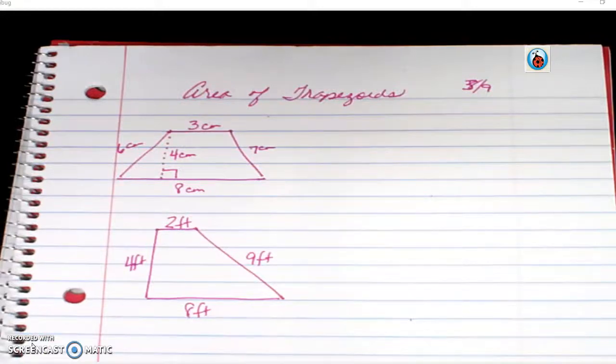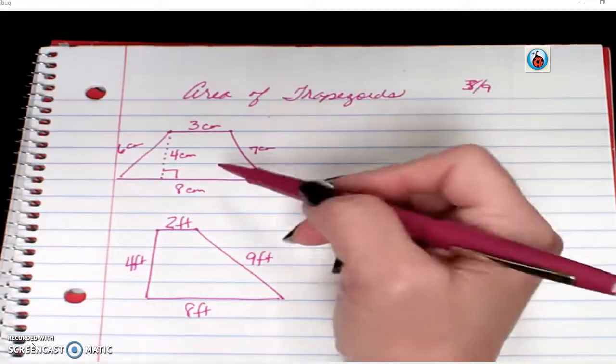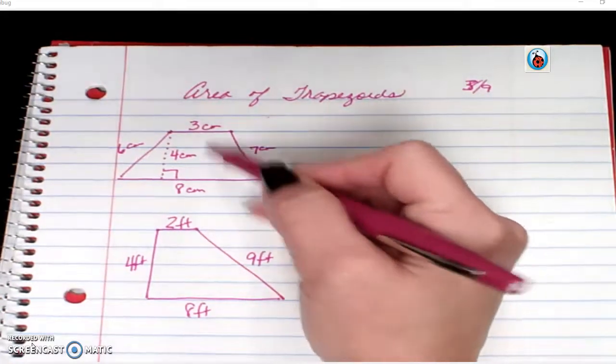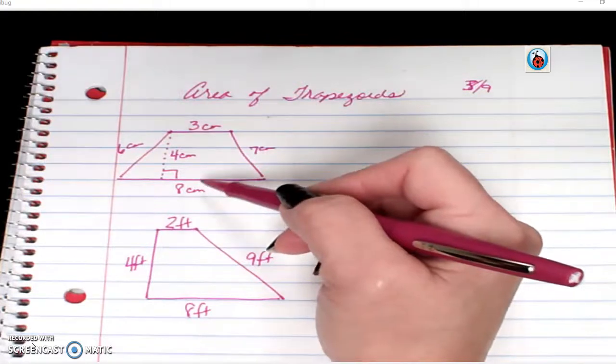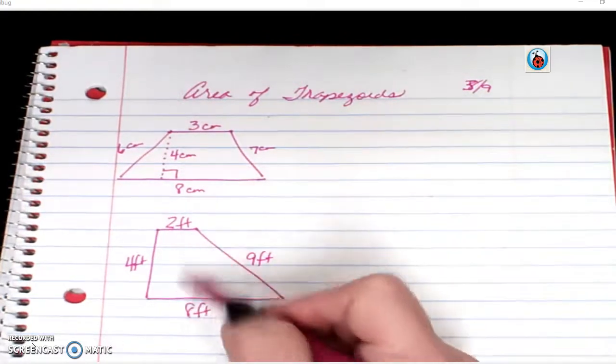Remember what a trapezoid is by definition. A trapezoid only has to have two parallel sides that are opposite from each other. So for instance, in this case, these would be your parallel sides. Okay, happen to be top and bottom here as well.